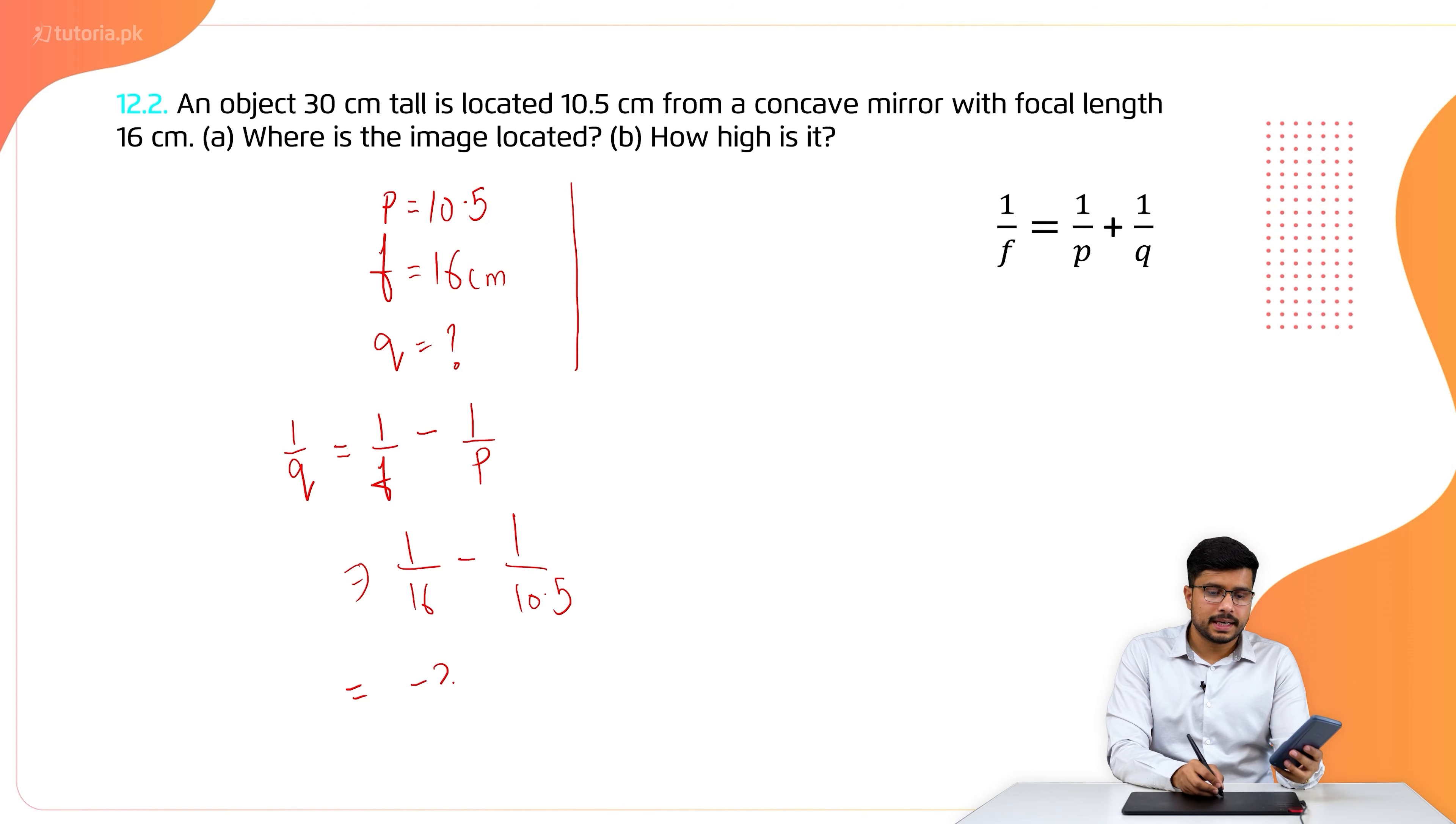Now we have to find the value of I. We have Q and P, and we have O. Using I over O equals Q over P, Q is equal to minus 30.5, P is equal to 10.5. I will multiply by O, which is 30.